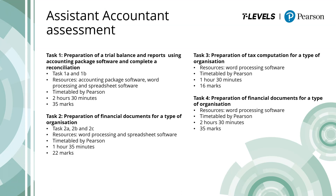In Task 4, students will prepare financial documents related to a given organisation: the statement of profit or loss, statement of changes in equity, statement of financial position, and statement of cash flows. Task 4 is split into four parts — one for each financial document. A resource document and digital answer booklet will be provided, and students should complete their work using spreadsheet and word processing software. Task 4 is worth 35 marks and is 2 hours 30 minutes in duration.